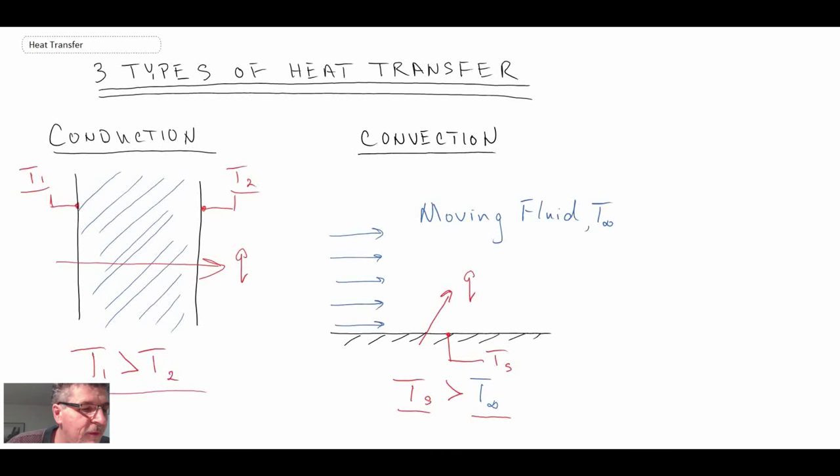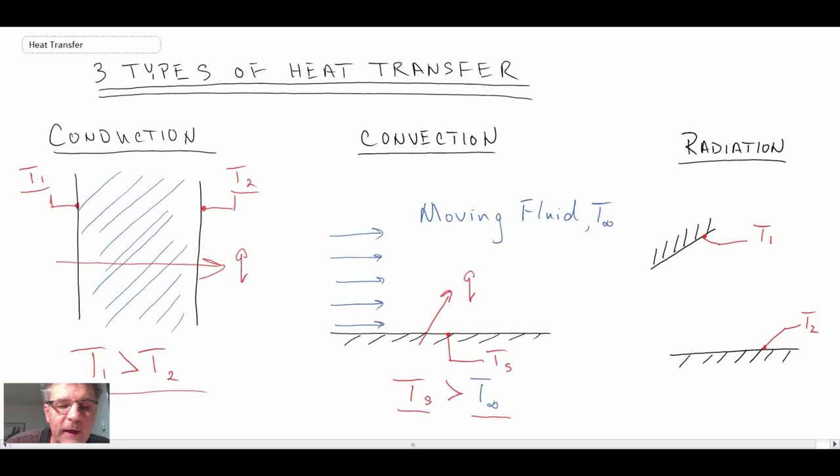The last form of heat transfer, and it's one that is very different from conduction or convection, is radiation. Now, when we're dealing with radiation, what happens is objects radiate and they absorb energy. And typically in heat transfer, we're looking at energy in the part of the spectrum referred to as the infrared.